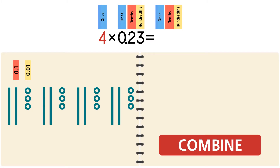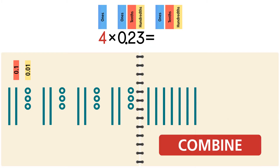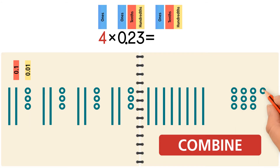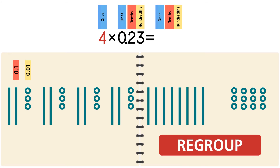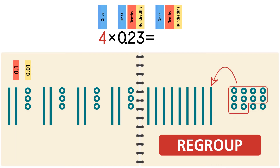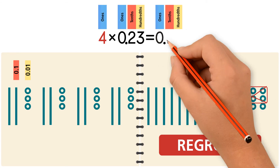Combine the tenths, then combine the hundredths. We see that we have 12 hundredths — we can't write 12 in the hundredths column, so we have to regroup 10 hundredths to make one tenth. Now we have nine tenths and two hundredths, so the answer is 92 hundredths.